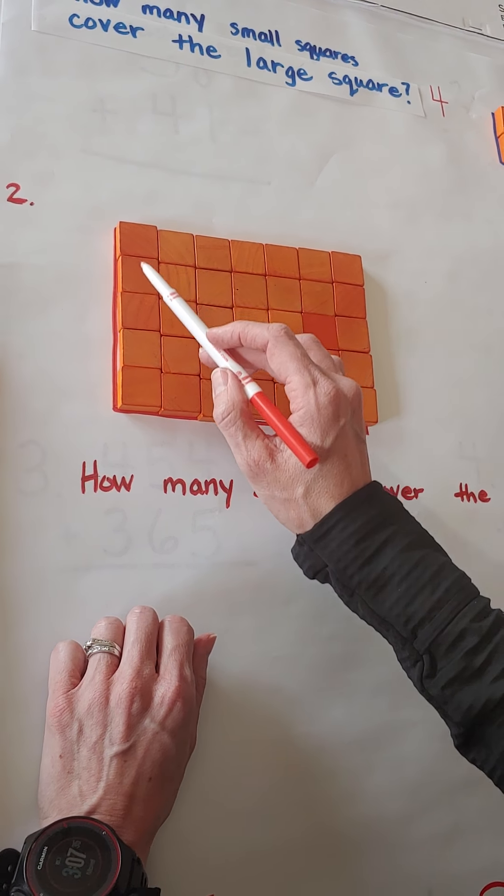We could count by fives, couldn't we? There's 5, 10, 15, 20, 25, 30, 35. So we've got 35 squares.